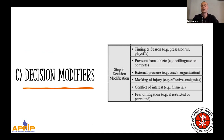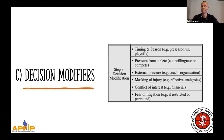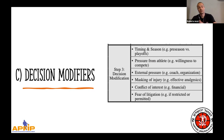Step three is decision modifiers. The timing of the season matters — if your best player rolls his ankle four days before game seven of the season final, he's going to play, even if the books say it should take three weeks. But if the same injury happens during the preseason, the athlete might stay sidelined for three, four, or five weeks so he's ready for the rest of the season. We must also consider pressure from the athlete, his emotional status, external pressure, masking of injury, conflict of interest, and fear of litigation.